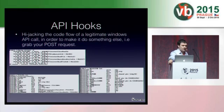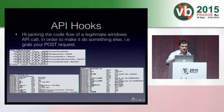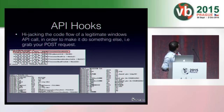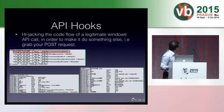And then there are API hooks. By hijacking the flow of a Windows API call, the malware can grab your POST request or your banking website, for example. You can see we have a call to InternetCloseHandle. If we disassemble at that point, we see there is a jump. If we follow the jump, it links to the malicious code itself.